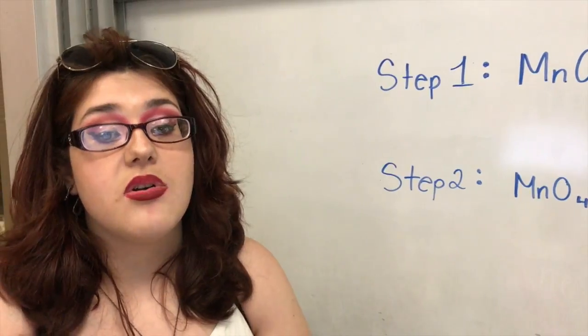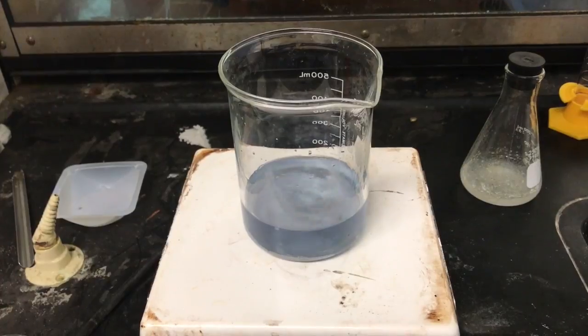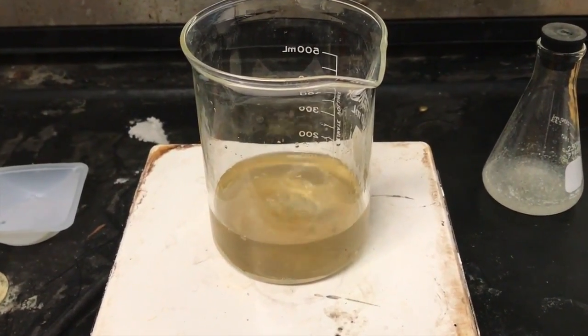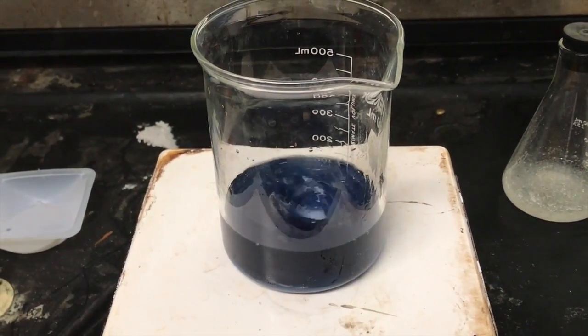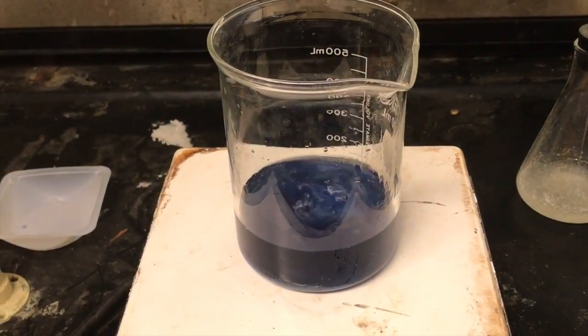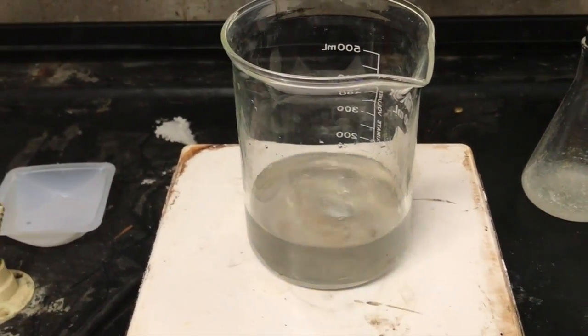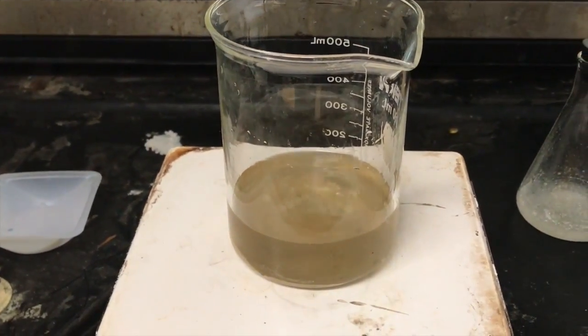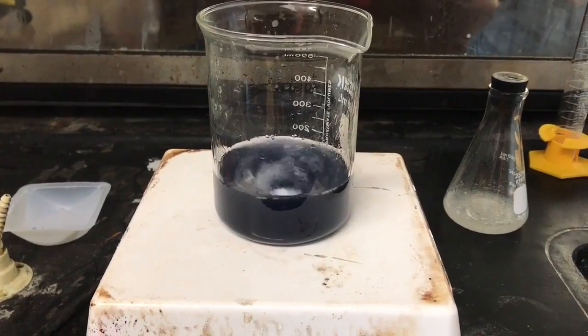During the reaction, potassium iodate is being reduced. Solution A, hydrogen peroxide and water, and solution B, potassium iodate and sulfuric acid are poured into a beaker. The mixture creates a clear solution, meaning the iodine and iodine ion concentration has decreased. Then the solution turns yellow, meaning the iodine and iodine ion concentration has decreased.